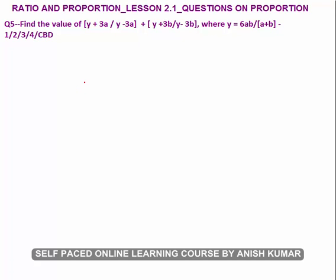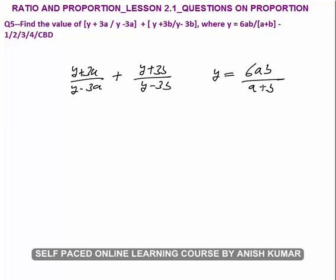Question 5: find the value of (y plus 3a) divided by (y minus 3a) plus (y plus 3b) divided by (y minus 3b), given that y equals 6ab divided by (a plus b). If you directly substitute the value of y, you get very complicated equations. Instead, we apply the componendo and dividendo concept: if a/b equals c/d, then (a plus b) upon (a minus b) equals (c plus d) upon (c minus d).